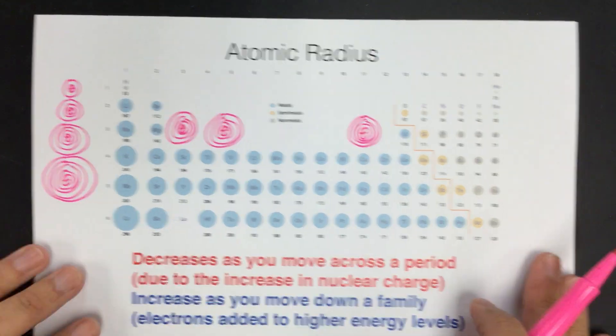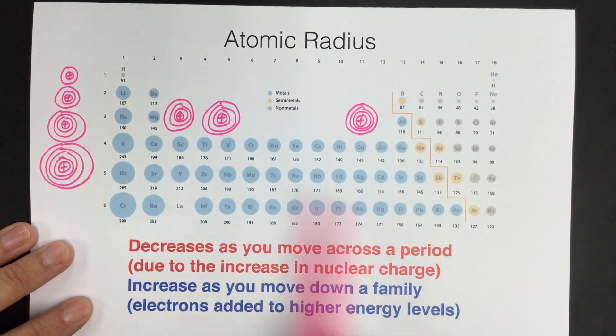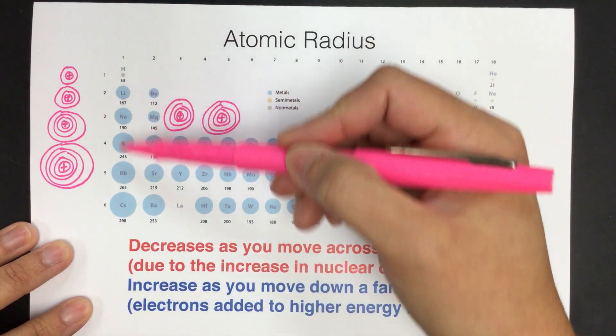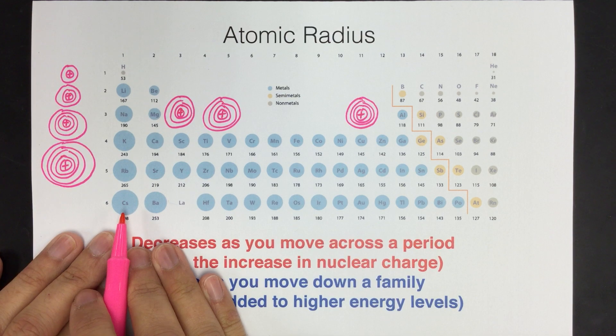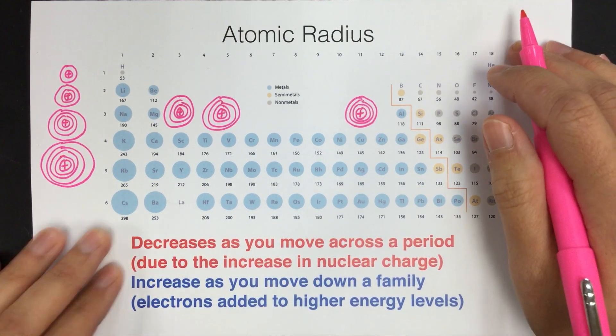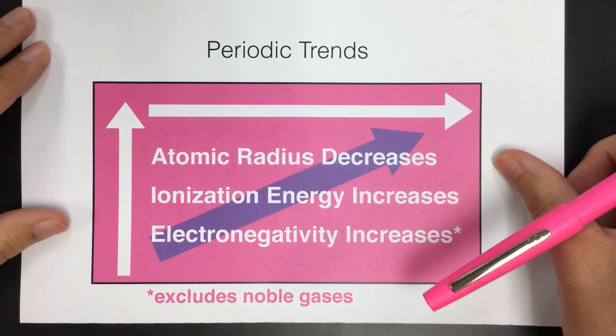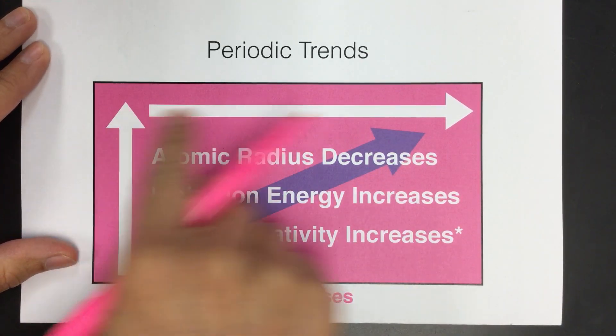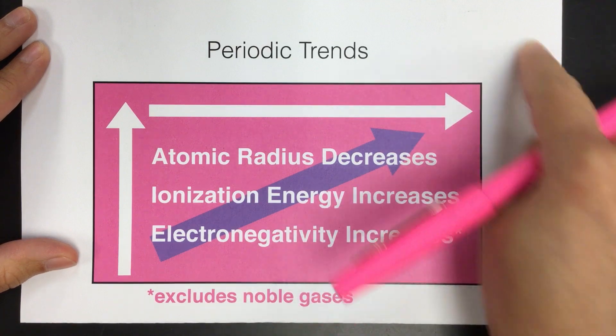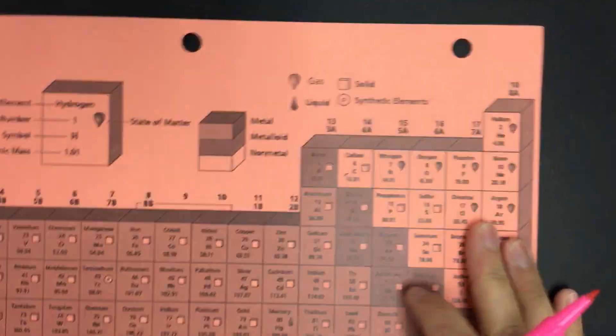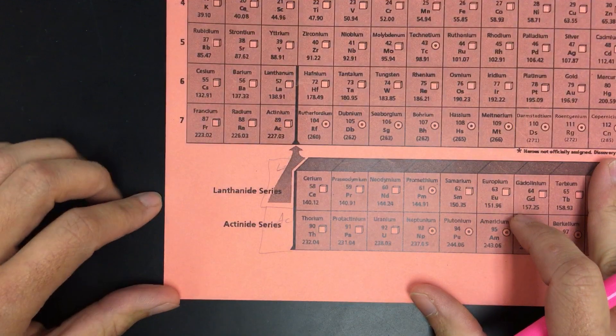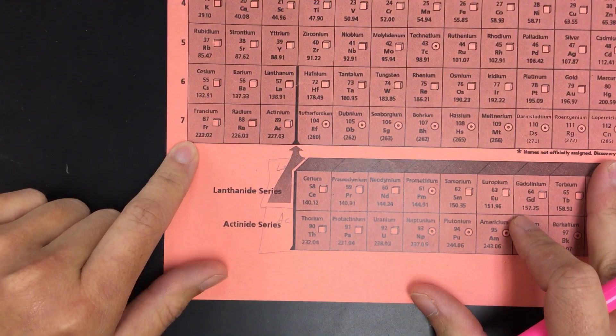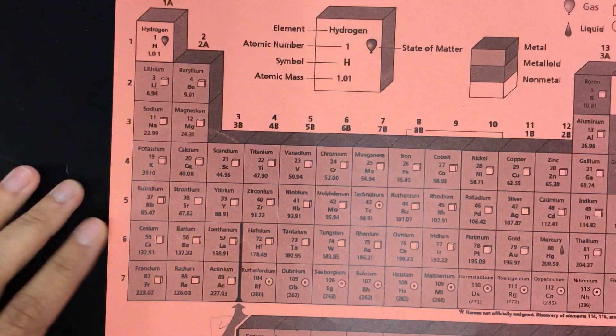But before we jump to that, I do want to point out, since the trend says they get smaller as we go across and then they get bigger as we go down, that tells us that the bottom left corner of the table is going to be really big and the top right corner is going to be really small. And we can look back here at the summary chart, right? The size gets smaller as we go up and to the right. So that means this side is going to be our smallest element. And if we look at our table, that points us to helium. So helium is going to be the smallest atom, and down here in the opposite corner, francium is going to be the biggest. And that's going to be a really easy way that we can quickly determine the size relative to different elements.